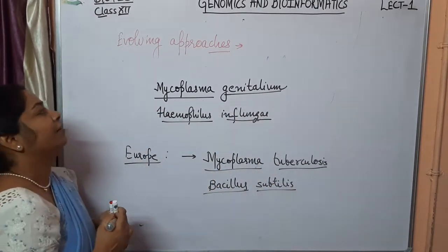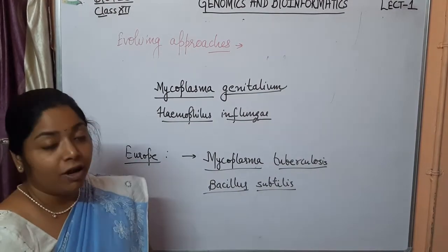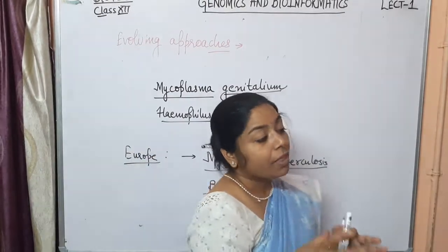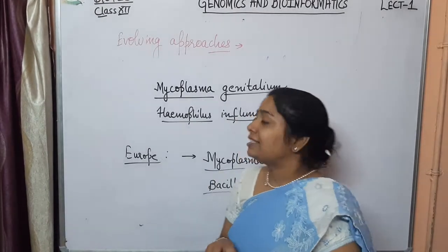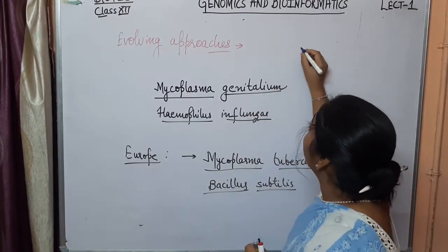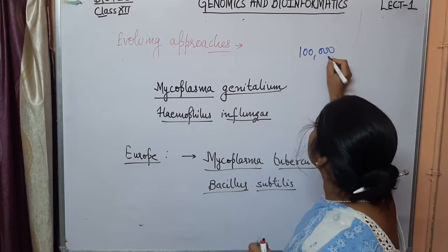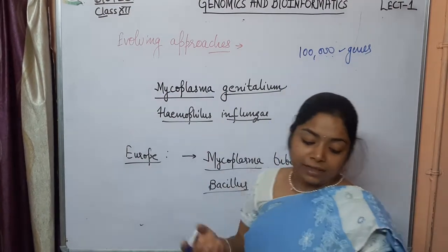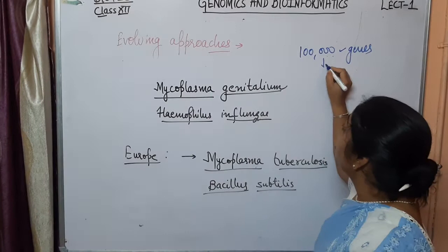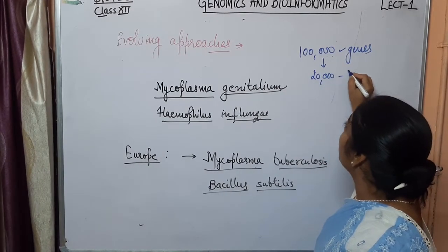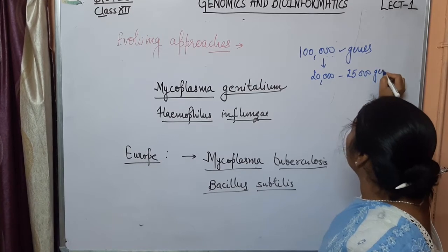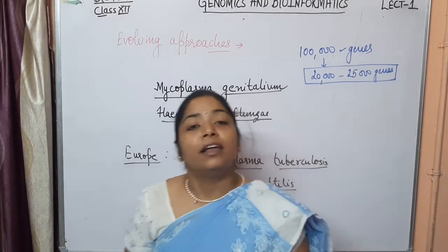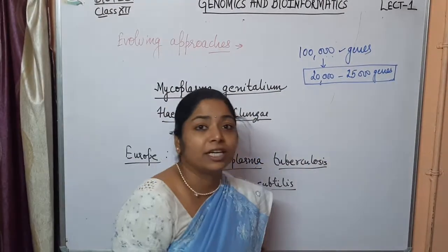Before the Human Genome Project, scientists estimated there were approximately one lakh genes in the human body. However, after the completion of this project, they found the actual number of genes present in our body was significantly different — much lower than expected. This was one of the key findings of the Human Genome Project.